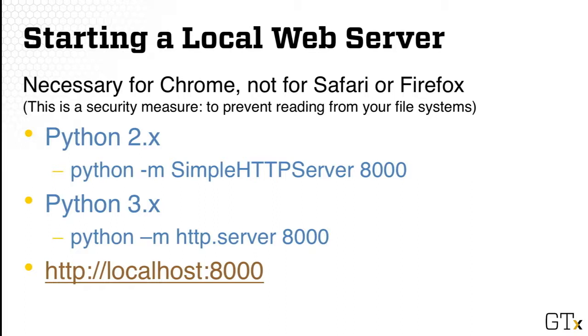To launch a simple server, the easiest way is probably using Python. In Python 2.x, you would type python -m SimpleHTTPServer and provide a port. In Python 3, it's a slightly shorter command: python -m http.server, and also provide the port 8000. After you launch these commands either way, you'll go to your browser and type localhost colon and the port number. This will allow you to access files that are hosted on your computer, essentially turning your computer into a web server.